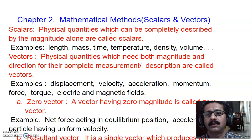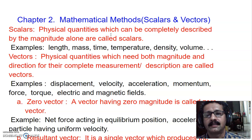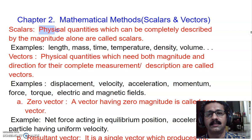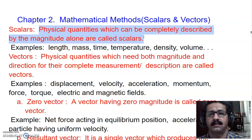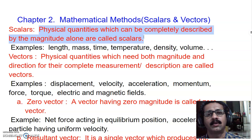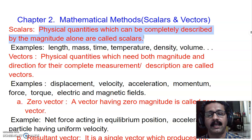First, let us talk about scalar physical quantities. Scalar physical quantities are all those physical quantities which can be completely described by their magnitude alone — you do not need any direction for their complete description. Examples include speed, length, temperature, time, density, volume, and mass. All these physical quantities do not require any direction for complete representation, so they are called scalar physical quantities.